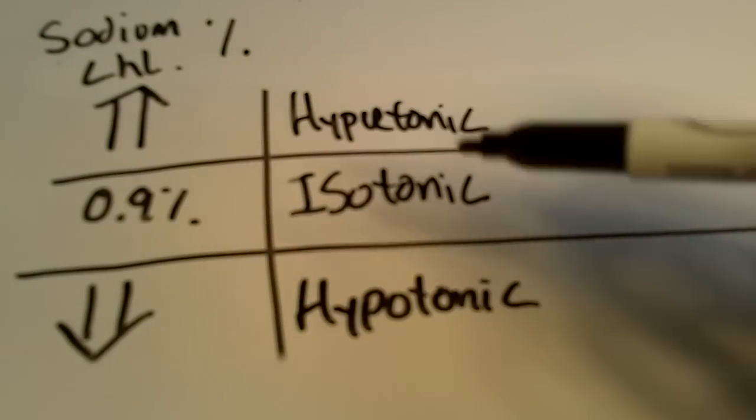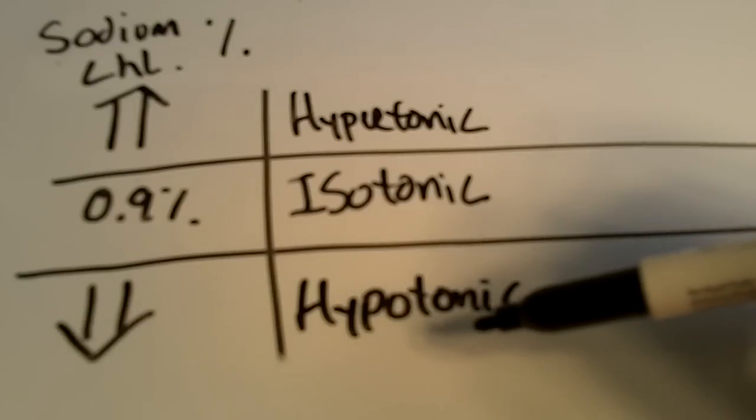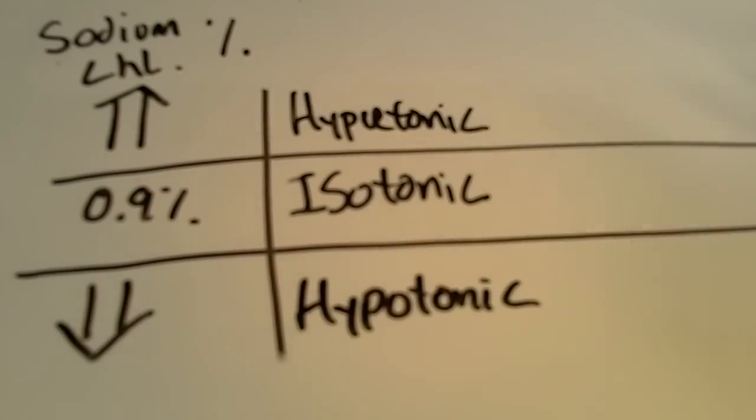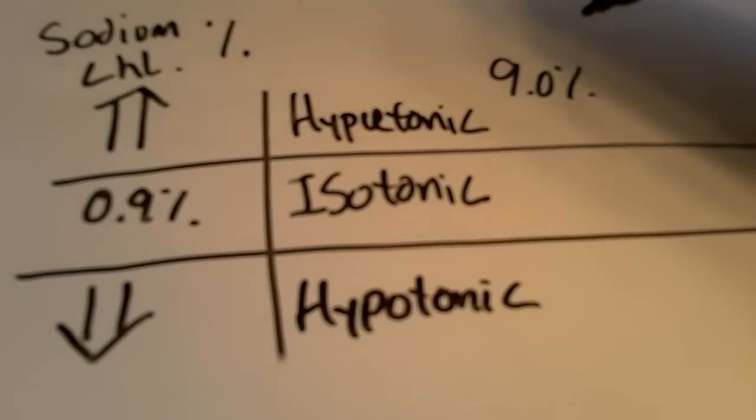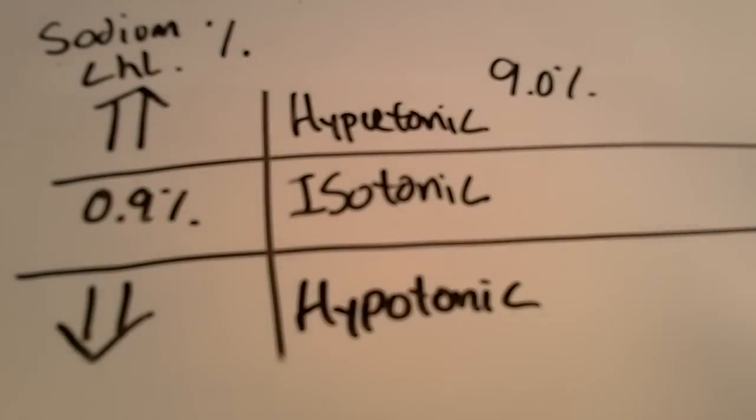And you know that hyper means over and hypo means under, when you are faced with this question, then you can look at the different answers and what's available, and you can see that D at 9% would definitely be hypertonic. So, the answer is D, 9% is a hypertonic solution, whereas the rest are either isotonic or hypotonic.